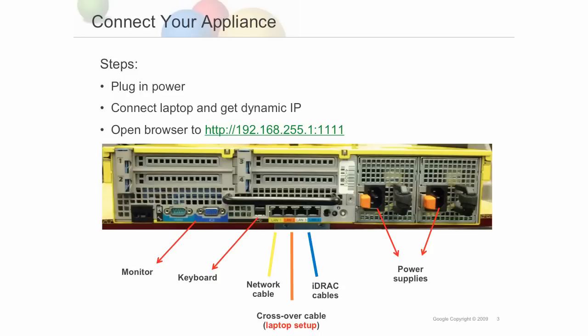Five, you plug in the orange crossover cable to the appliance and a laptop. The appliance will configure a dynamic IP address on the laptop. And six, you open a laptop browser to the address shown here. The appliance's network configuration wizard will display. If you encounter errors at this point, check documentation or contact support for help.